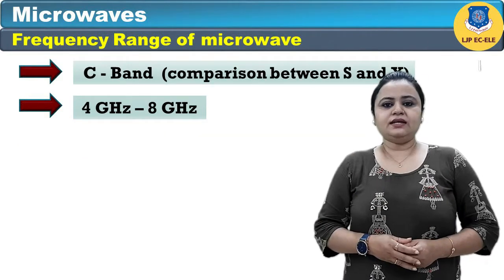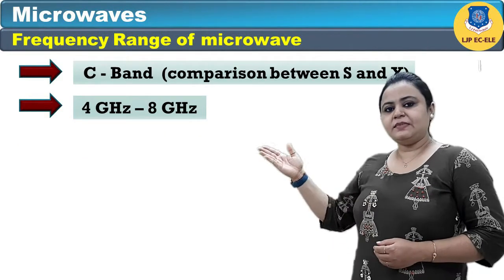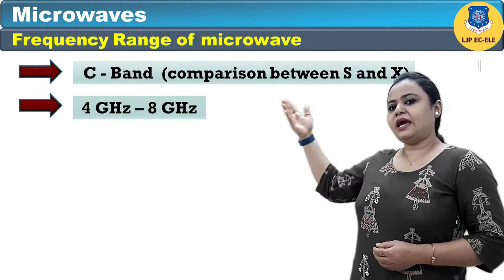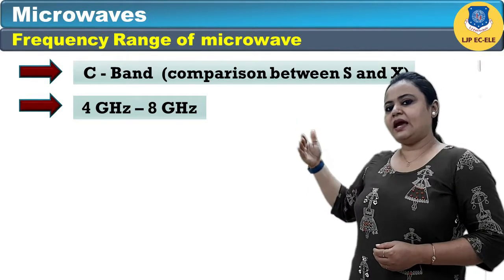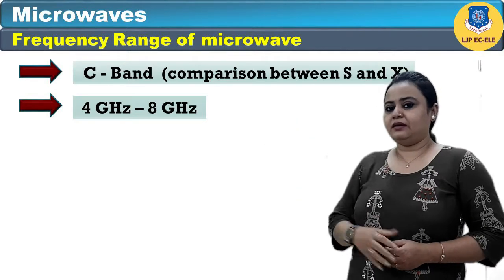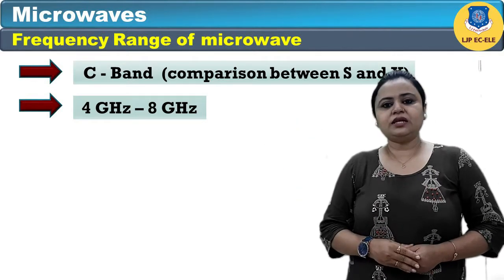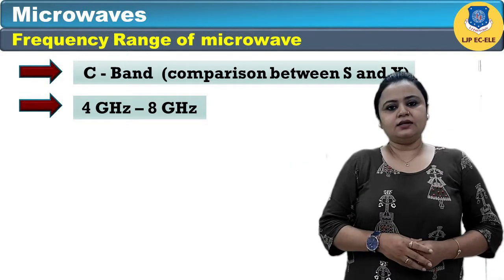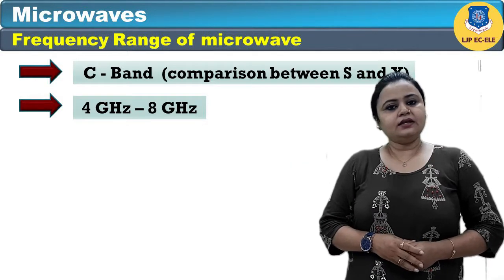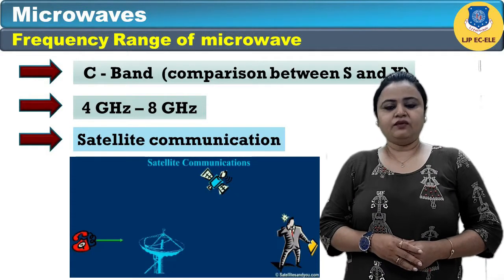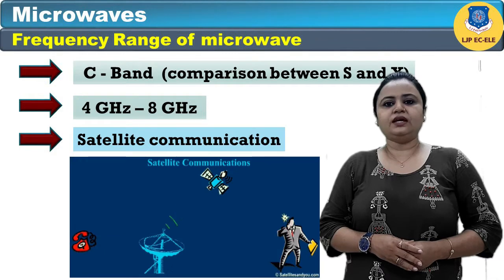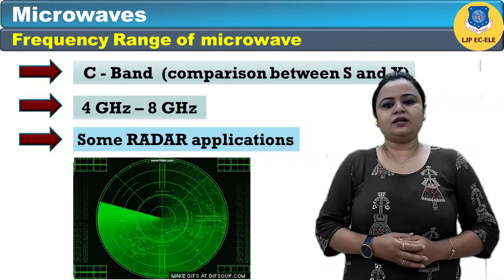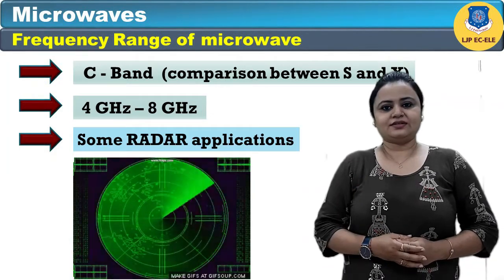The next band is the C band, which is a comparison between the S band and X band. It ranges from 4 to 8 GHz and is the most important band, useful in satellite communication and some radar applications.